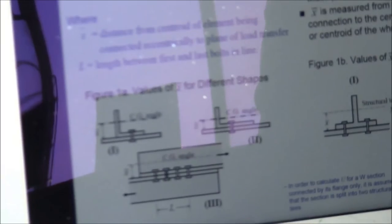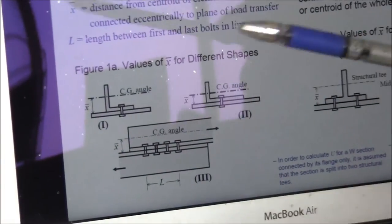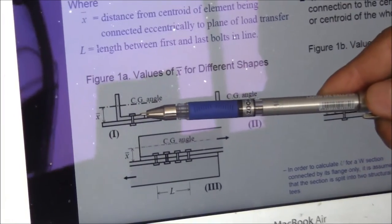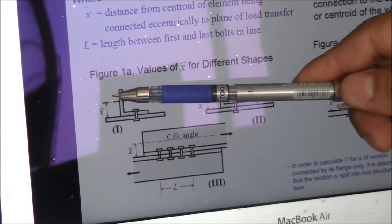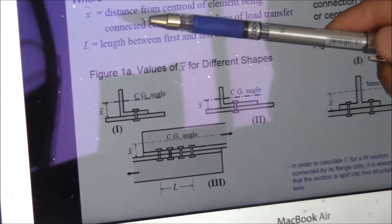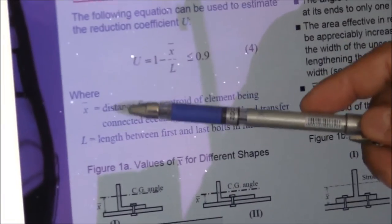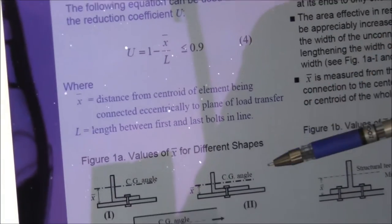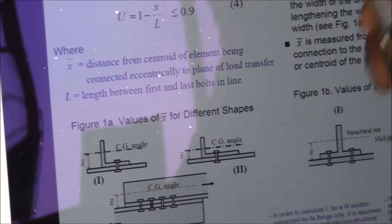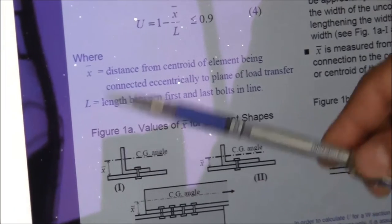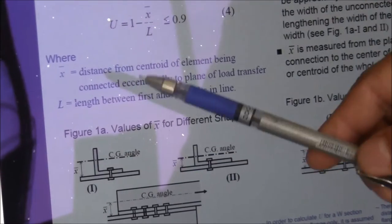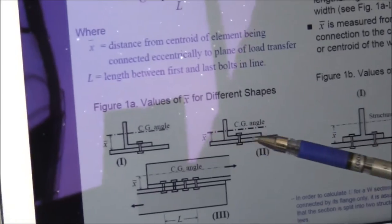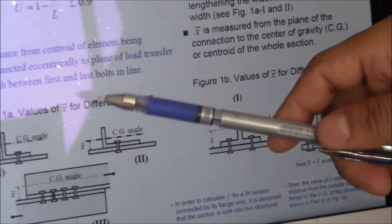Let's go through the formula. For an angle, the plane of shear transfer is between the connecting plate and the member. So x̄ in the formula is the distance from that plane to the centroid of the angle. Be careful: depending on whether the larger leg is up or down, the value may be listed as x̄ or y̅ in the manual, depending on the layout of the angle in the connection.